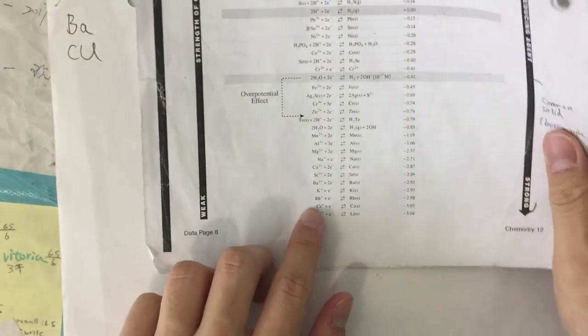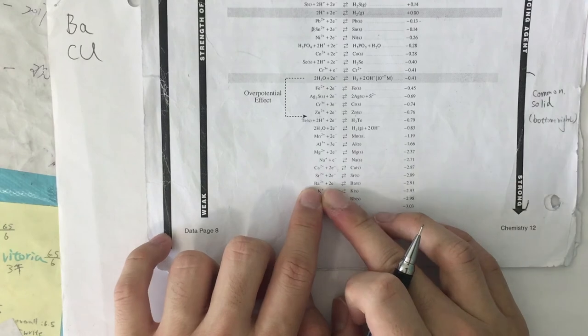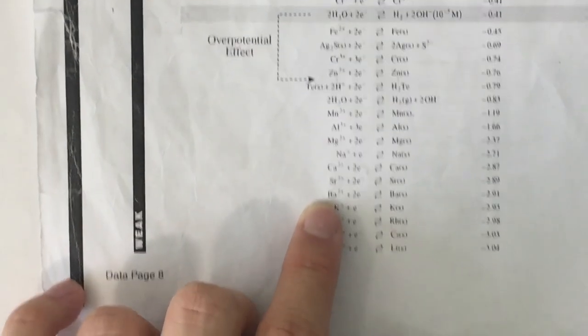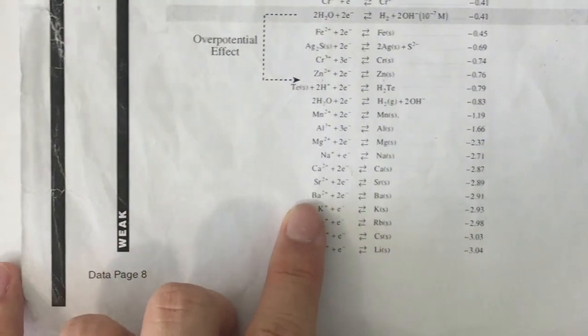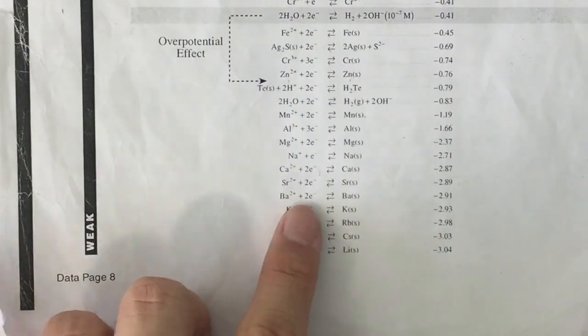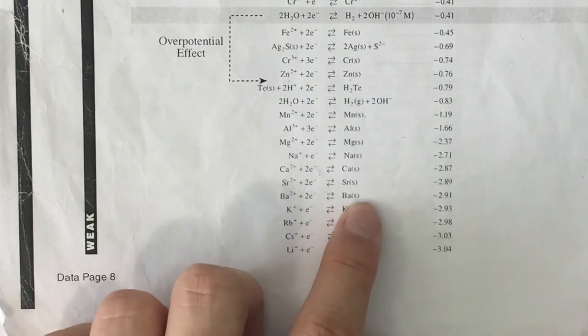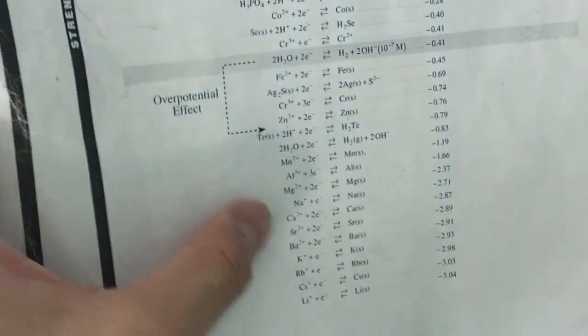Ba is actually here — Ba²⁺ plus two electrons equals Ba solid. Let's write that down.